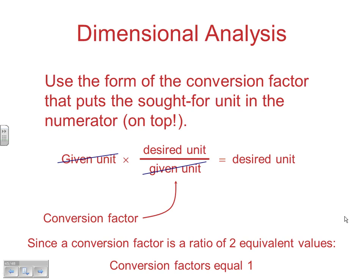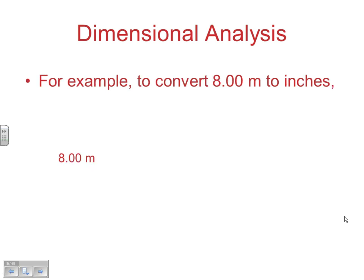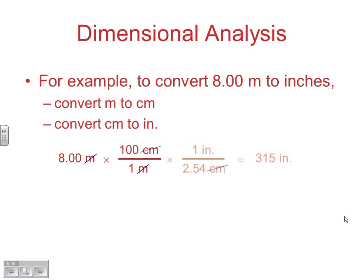For example, converting 8.00 meters to inches: first use 100 cm/1 m (meters cancel, centimeters remain), then use 1 inch/2.54 cm to get 315 inches. When dealing with cubic units, be careful — 1 m = 100 cm does not mean 1 m³ = 100 cm³. You must cube both the number and the unit: 1 m³ = (100)³ cm³ = 1,000,000 cm³.